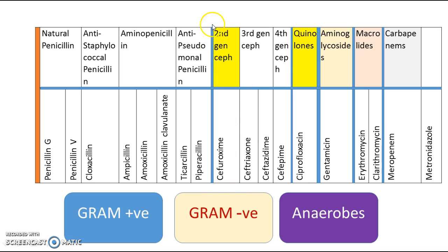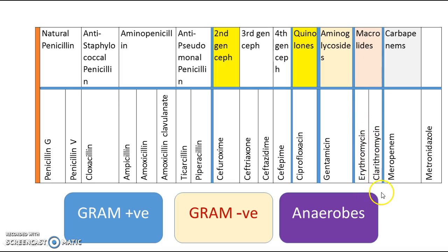We also have fourth-generation cephalosporins such as cefepime; quinolones such as ciprofloxacin (brand name Ciprobay); aminoglycosides such as gentamicin and amikacin; macrolides such as erythromycin, clarithromycin, and azithromycin; and carbapenems such as meropenem. There is also the special group metronidazole, which is mainly used to cover anaerobes.